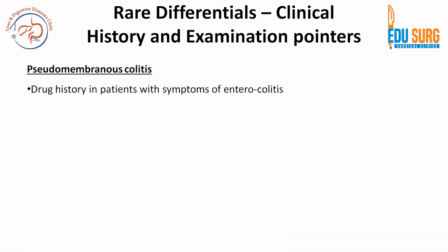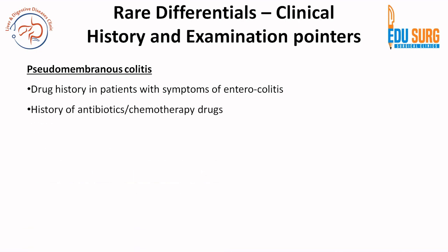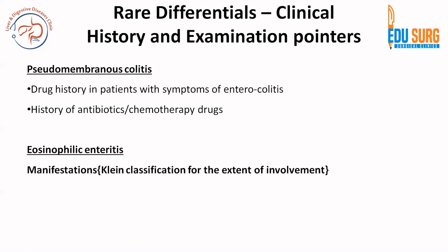Coming to pseudomembranous colitis: there is drug history with symptoms of enterocolitis. The drugs can be antibiotics or chemotherapy drugs, and once you know this history, you need to suspect pseudomembranous colitis. Importantly, do not do bowel prep — the pseudomembranes can be washed out by bowel prep. So do not perform bowel prep if you suspect pseudomembranous colitis.